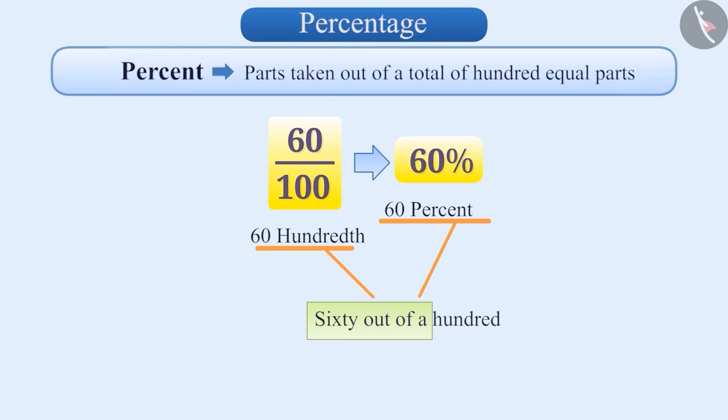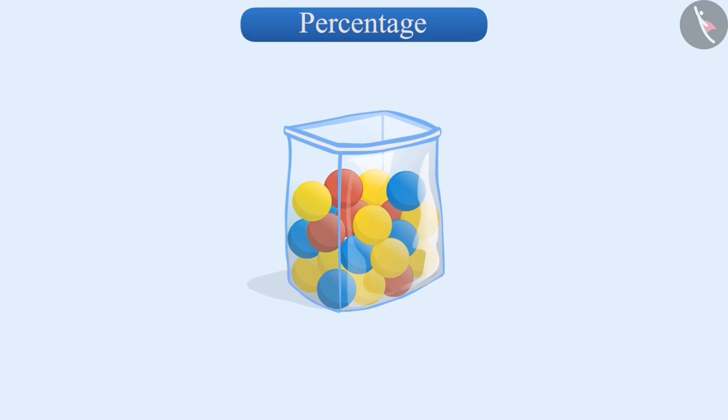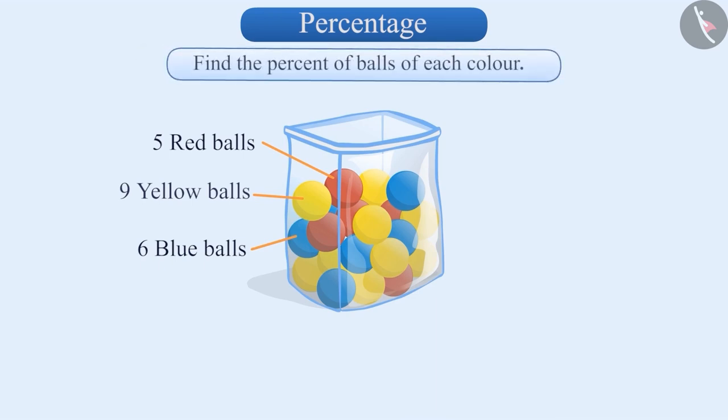Now, let's find out how to find percent in mathematics. Suppose a bag contains 5 red balls, 6 blue balls and 9 yellow balls. Let us find the percent of balls of each colour.